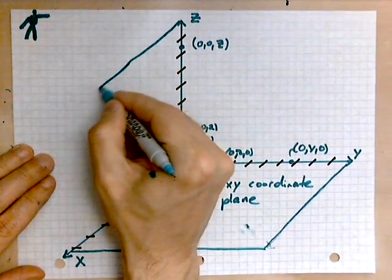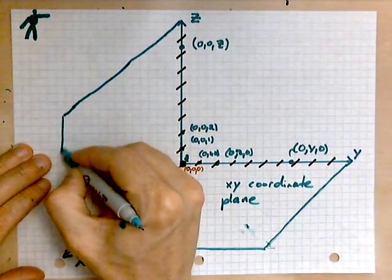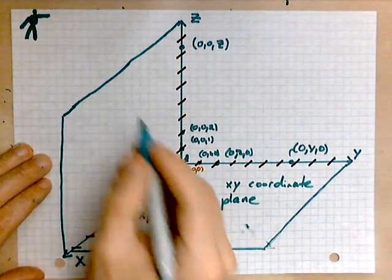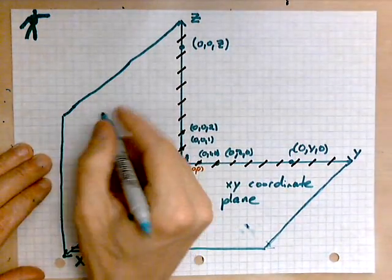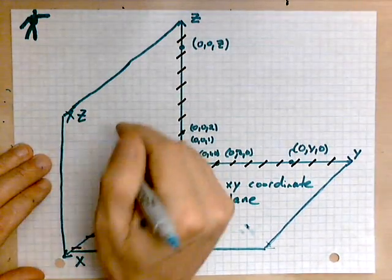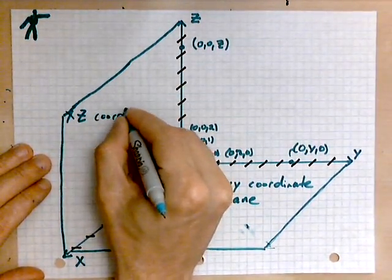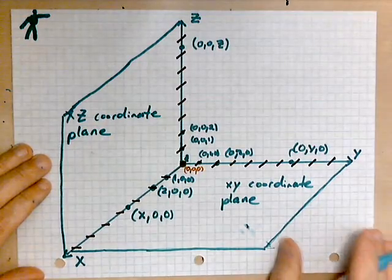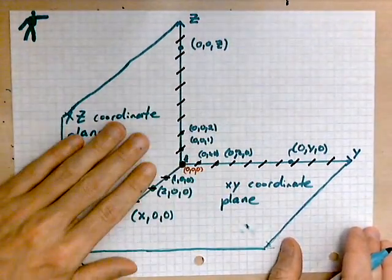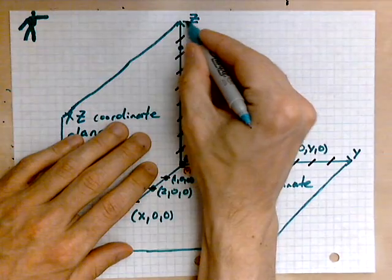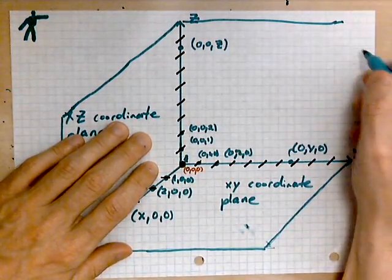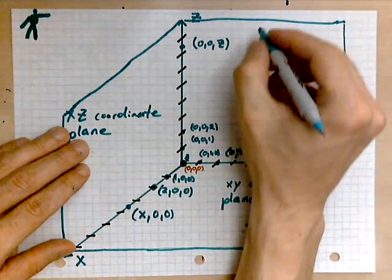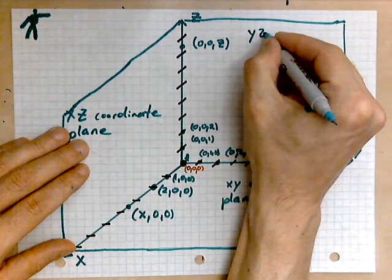Then the one I'm drawing now, this is known as the xz coordinate plane. So this is the xz coordinate plane. And then the one in the back would be the yz coordinate plane. So that one looks like this. So the one in the back is the yz coordinate plane.